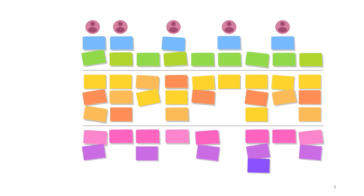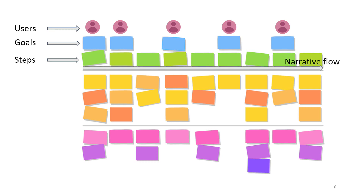This is a user story mapping board. The first row contains users — the audience you build features for. The second row is goals — what you want to build for the audience. The third row, steps, are what you need to do to achieve the goal. To achieve these steps, you break them down into many stories and tasks, which creates a narrative flow so you can visualize your ideas.